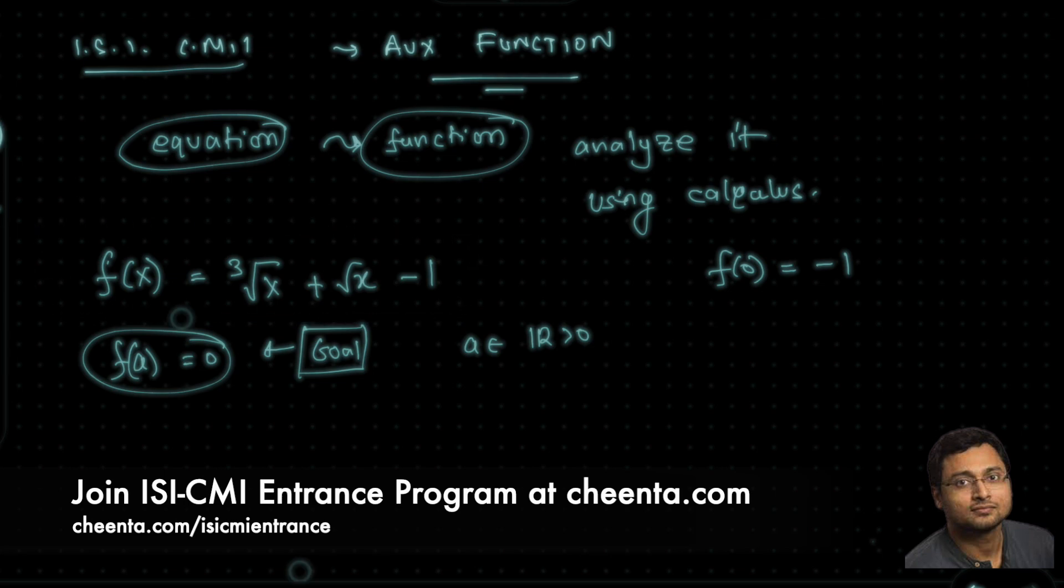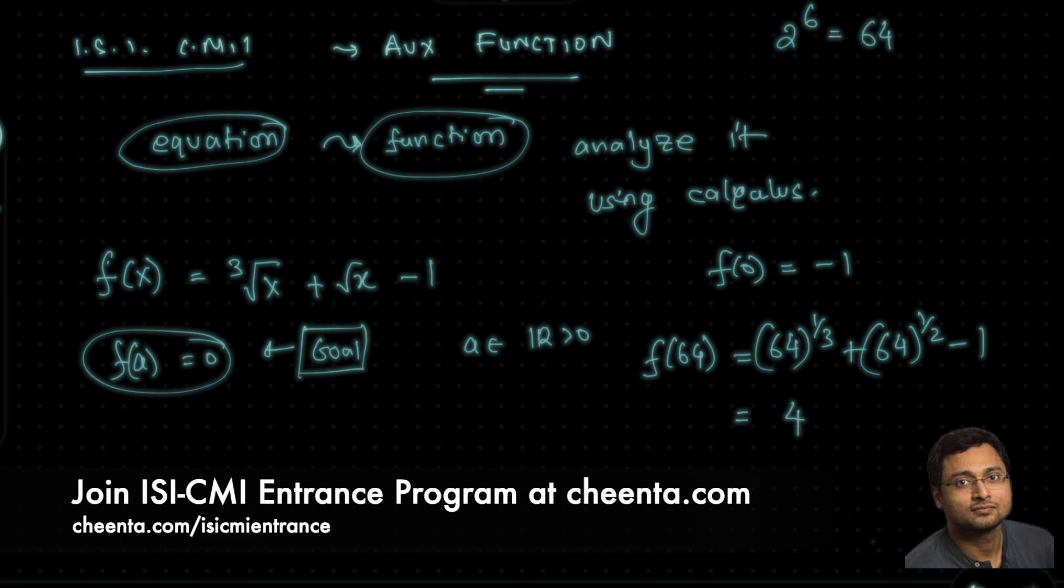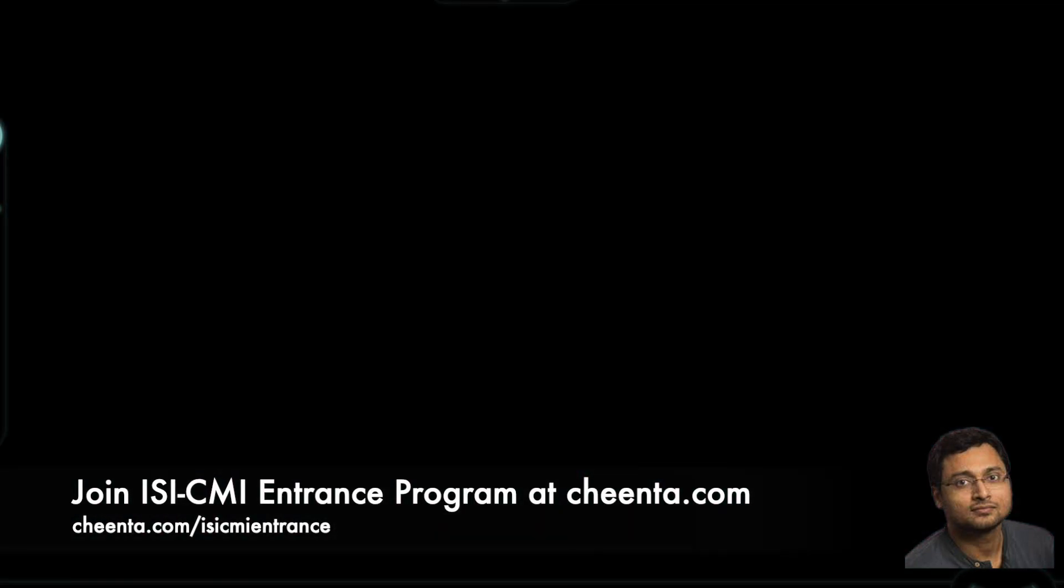And f(64) is equal to third root of 64 plus square root of 64 minus 1. The reason I chose 64 is because it has both a third root and a square root because it is the 6th power of 2. Third root of 64 is 4 and square root of 64 is 8. So 4 plus 8 minus 1, that's 11. We are almost done. We have showed that f(0) is negative 1 and f(64) is positive 11.